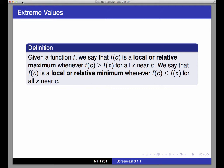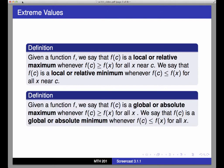On the other hand, if f of c is bigger than or equal to f of x for all x, that is, if f of c is the highest point on the graph at any point, not just near c, then we say that f of c is a global maximum.